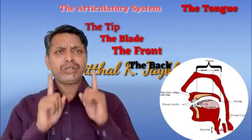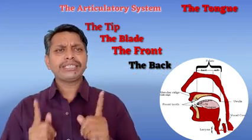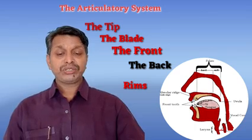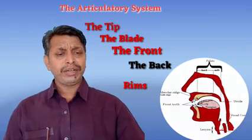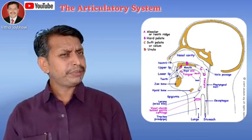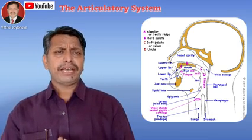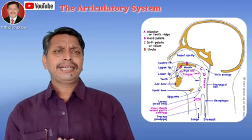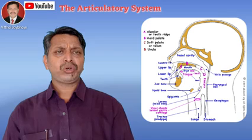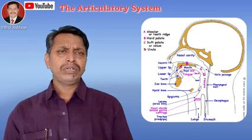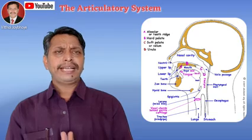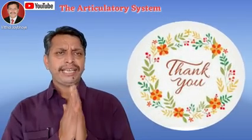So the four important parts of the tongue are: tip, blade, front, and back. Additionally, the two edges of the tongue are known as rims. These are the very important organs of speech included in the articulatory system. Among all of these, only the pharynx is not possible to see in the mirror — all remaining organs of speech can easily be seen in the mirror. Try to understand all these organs of speech and be ready for the next part: the description and classification of English sounds.